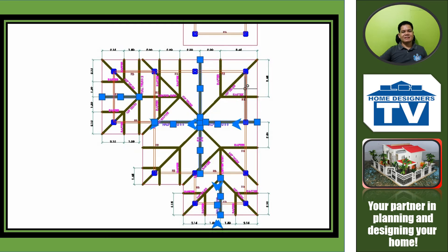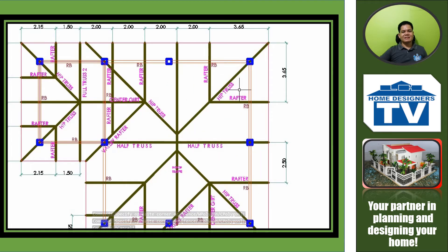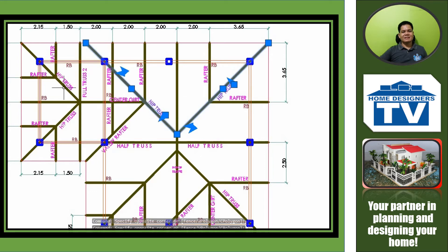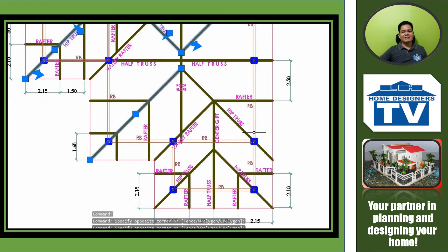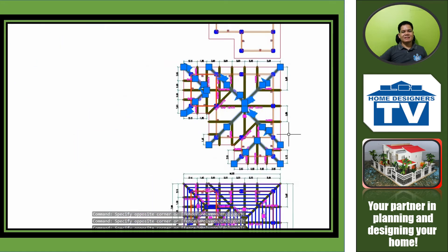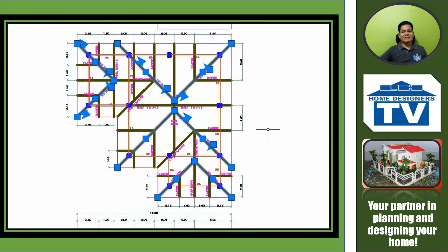Another type is the hip truss. Let's locate all the hip trusses in this design: 1, 2, 3, 4 — this is the fourth one. The fifth hip truss, sixth, seven, and eight. So there are eight hip trusses in this roof framing plan.